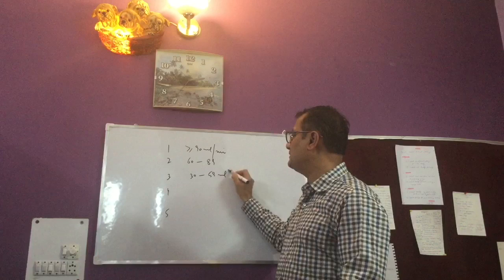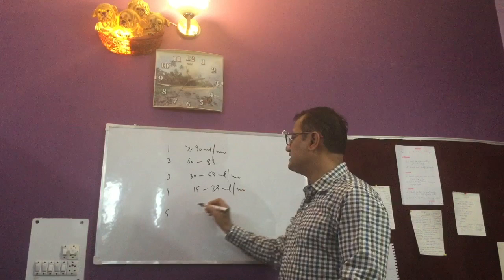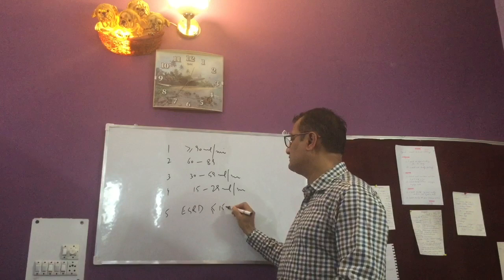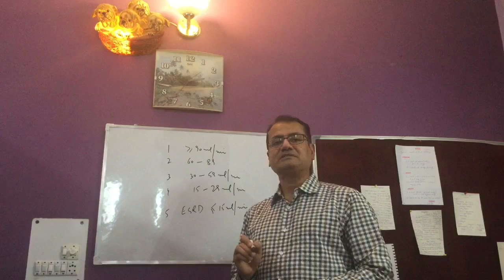Stage 2 is 60 to 89, stage 3 is 30 to 59 ml per minute, and stage 4 is 15 to 29 ml per minute. And stage 5, the end stage renal disease, is described as less than or equal to 15 ml per minute kind of GFR.